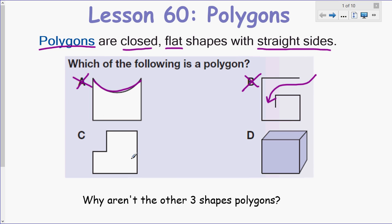Letter C, this is looking pretty good. It's closed, it's flat, all the sides are straight. Let me just check with D to make sure. D is not a polygon because it's not flat, it's 3D. So we found it. Letter C, the shape there, is a polygon.